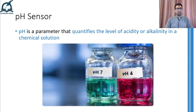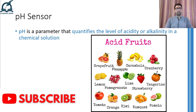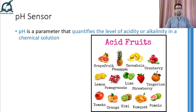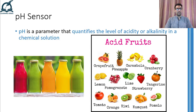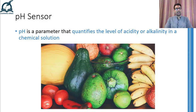Moreover, if we talk about fruits and their juices, then lemons, apples, oranges, and grapes are acidic in nature. And therefore, if we are manufacturing bottled juice of their flavor, then the pH value should match with the pH value of fruits that are naturally available. On the contrary, most of the green vegetables, carrots, mangoes, and many other naturally occurring fruits and vegetables are alkaline in nature.